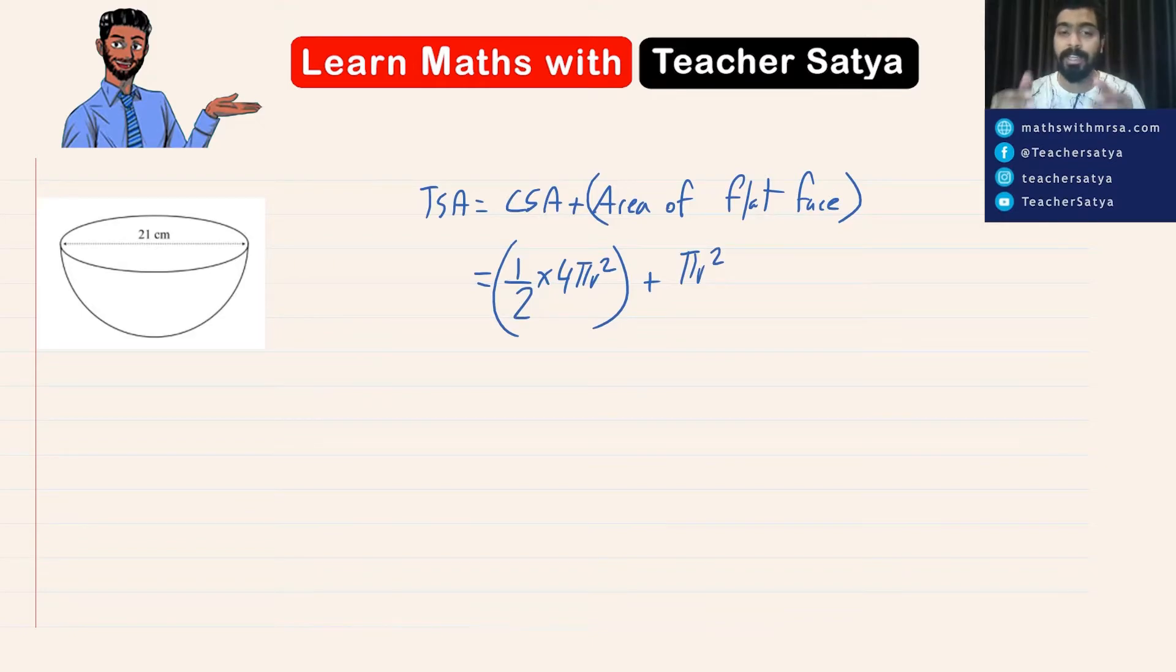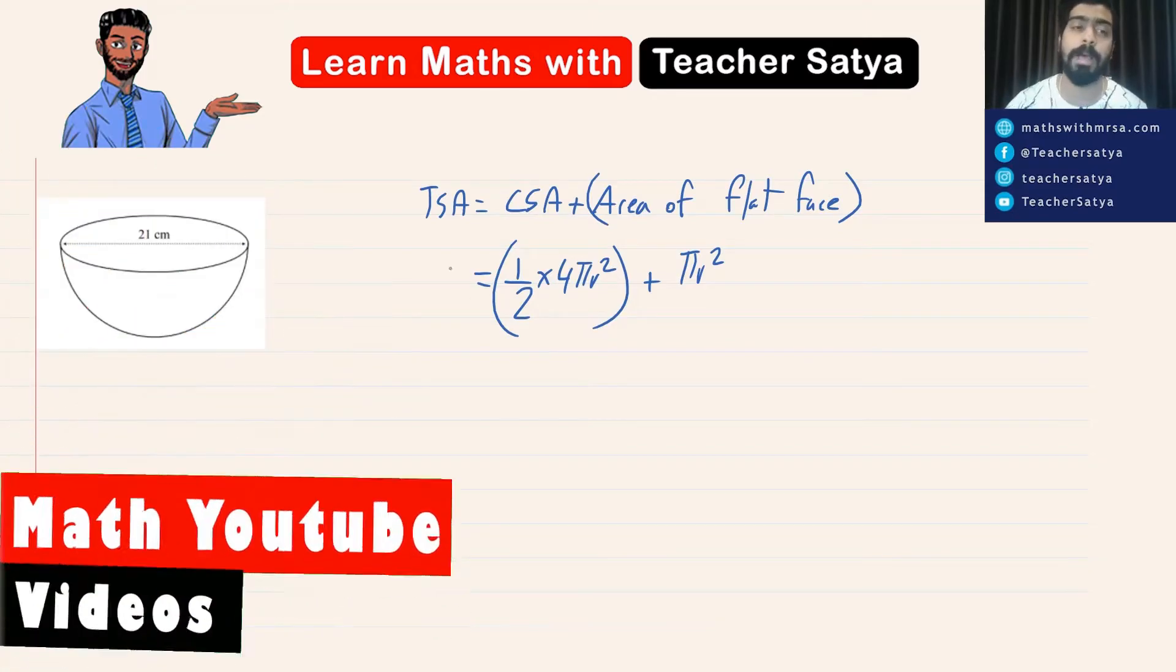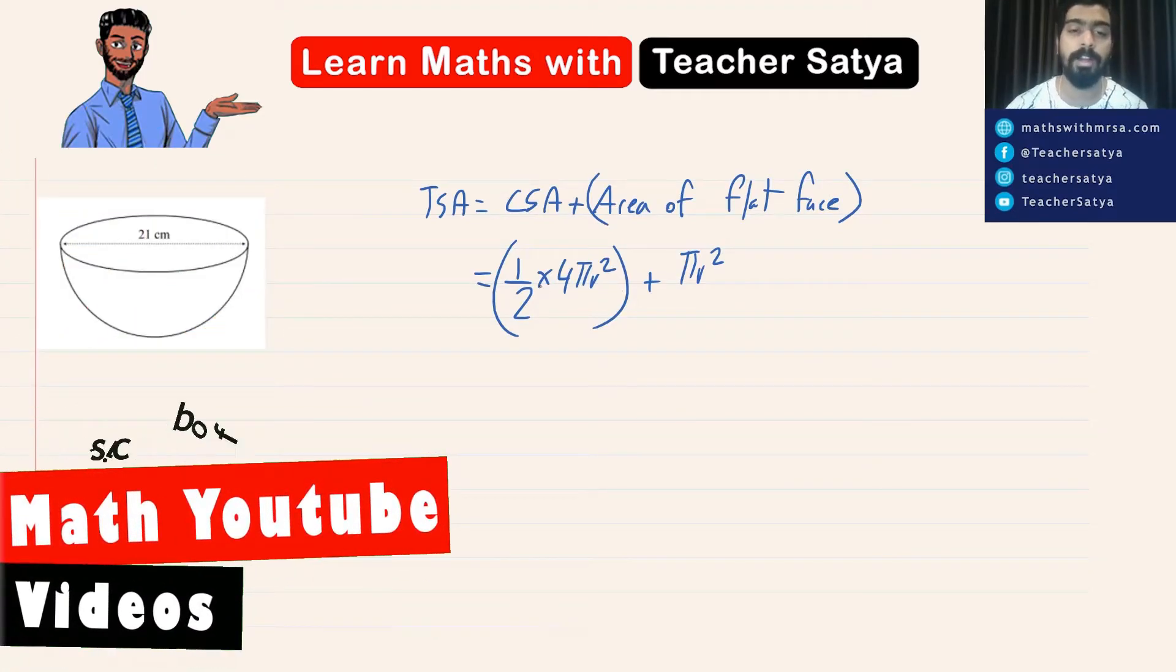So what we did here is the CSA is half of the sphere plus the area of the flat face, which is pi r squared. Now let's see what we have here guys. So 2 and 4 can simplify. So 2 will change to 1 and 4 will change to 2.